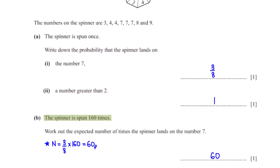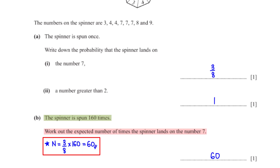The spinner is spun 160 times. Work out the expected number of times it lands on 7. We multiply the probability of landing on 7, which is 3/8, by 160, giving an expected value of 60.